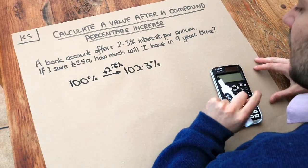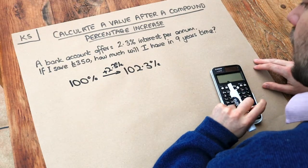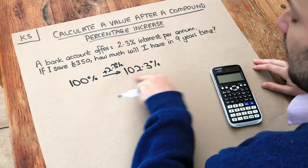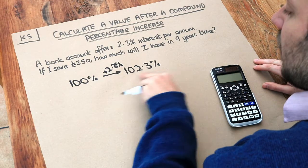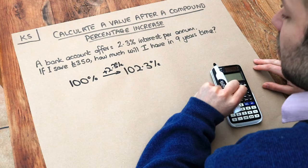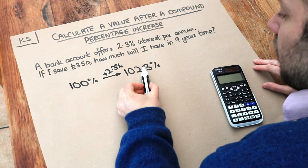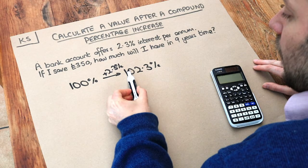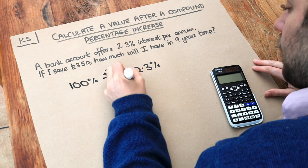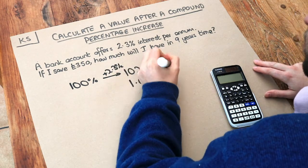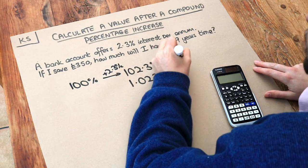And remember, we can turn this into a decimal multiplier. And we do that by just getting the decimal equivalent of this. What's this as a decimal? Well, to convert a percentage to a decimal, we divide by 100. Dividing by 100 means that decimal point 2 places, we get 1.023. So 1.023, that is your decimal multiplier.